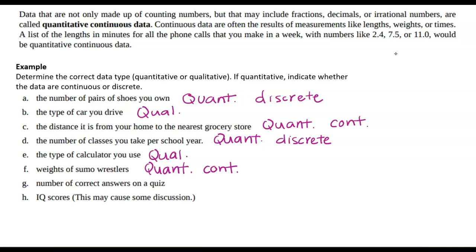The number of correct answers on a quiz. This is quantitative. And since it's the number of correct answers, that's going to be discrete. And then in class, when we convene together, I want us to talk about part H. So if we're looking at IQ scores, which would this be? I'm going to let you know that it's definitely quantitative. But do we think IQ scores are discrete or continuous?